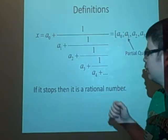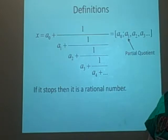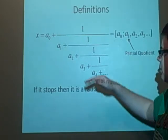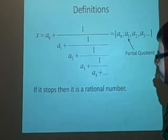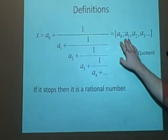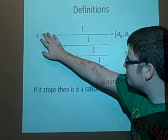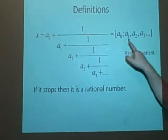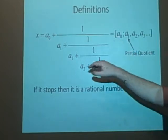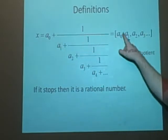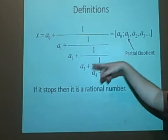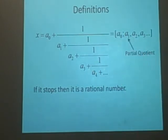If it does stop, then it means it's a rational number, so three over ten or whatever. And what we've got here, we denote this in this form. So we have a naught, which is our very first part, we have semicolon a1 comma a2, and these are the partial quotients, because they're parts of a fraction.